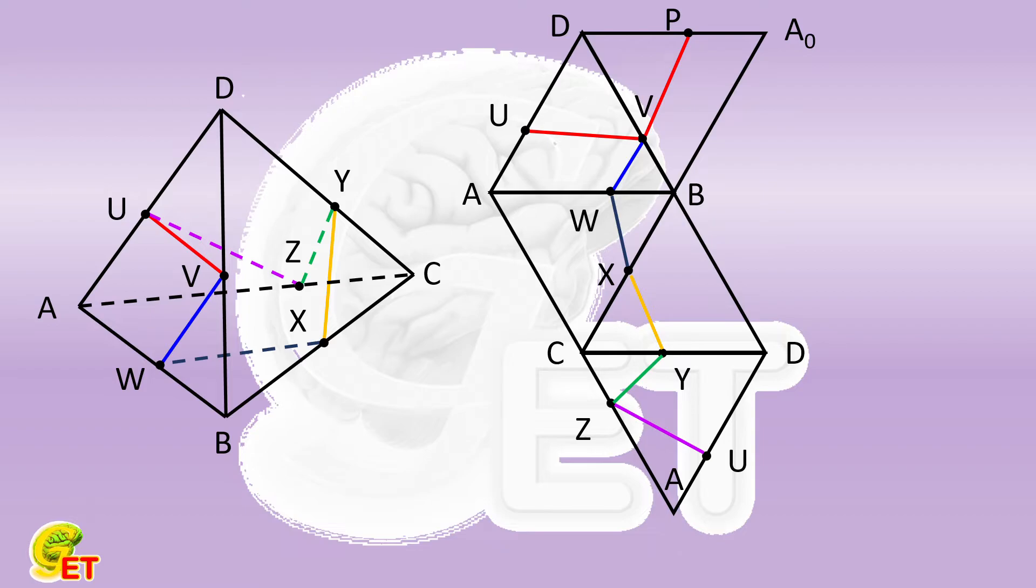Then take AC as the axis of symmetry to plot the symmetric figure of the triangle ACD. And find the symmetry point of U again, and denote it as Q. The minimum value of the summation of the lengths of these six segments, is actually the distance between point P and point Q.